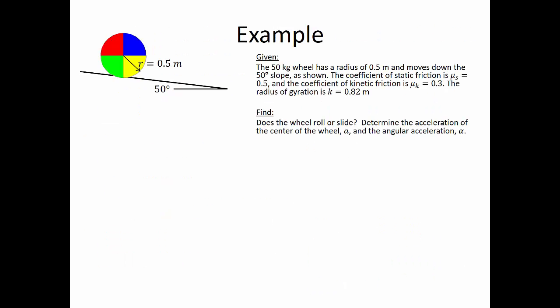To show how this is done, let's take a look at an example. Here we have a 50 kilogram wheel that has a radius of half a meter, and it moves down a 50 degree slope as shown. The coefficient of static friction is 0.5, the coefficient of kinetic friction is 0.3, and the radius of gyration is 0.82 meters. We want to find if the wheel rolls or slides down the slope, and we want to determine the acceleration of the center of the wheel, A, and the angular acceleration, alpha.